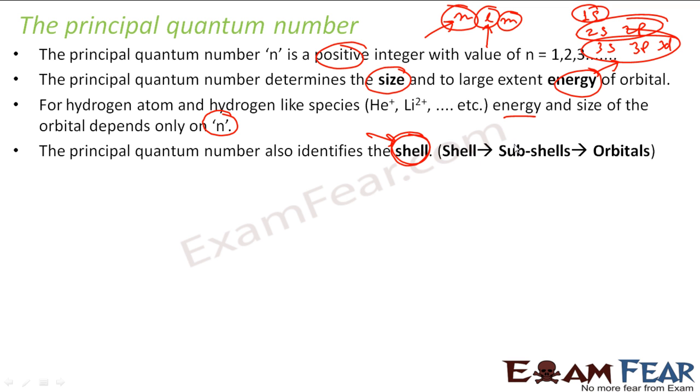The shell is further broken into subshells, and then subshells are broken into orbitals. But it is the principal quantum number which identifies the shell—whether shell 1, shell 2, or shell 3.